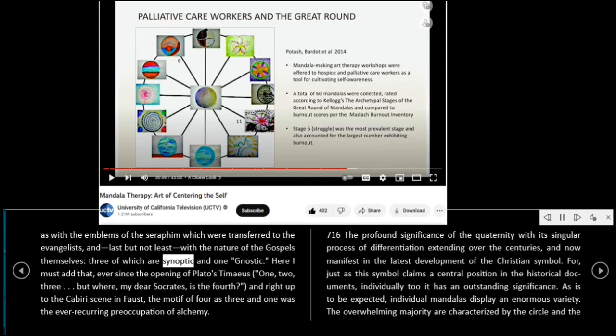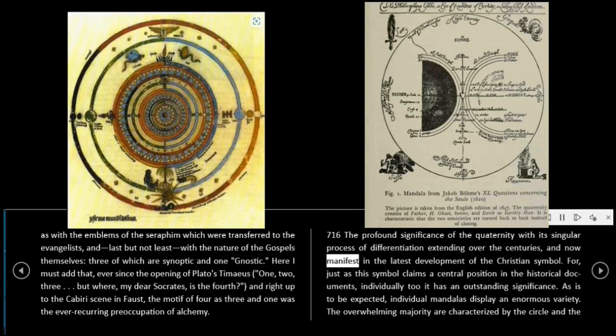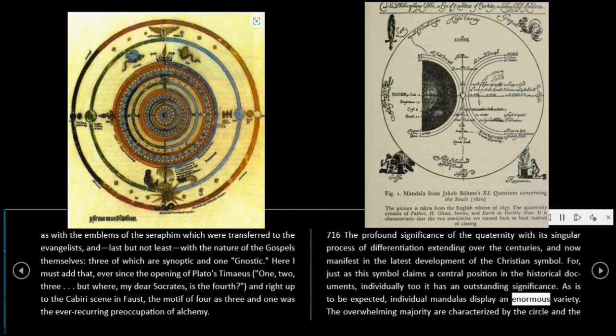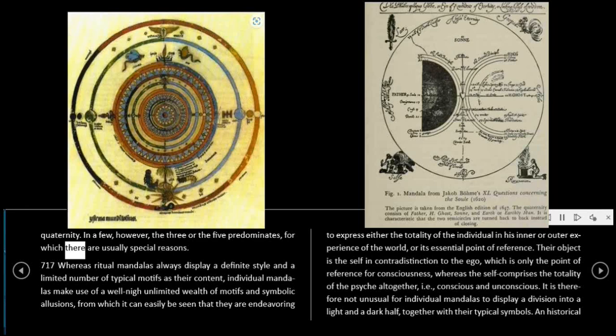Here I must add that, ever since the opening of Plato's Timaeus — one, two, three, but where, my dear Socrates, is the fourth? — and right up to the cabaret scene in Faust, the motif of four as three and one was the ever-recurring preoccupation of alchemy. 716: The profound significance of the Quaternity, with its singular process of differentiation extending over the centuries, and now manifest in the latest development of the Christian symbol, just as this symbol claims a central position in the historical documents, individually too it has an outstanding significance. Individual mandalas display an enormous variety; the overwhelming majority are characterized by the circle and the quaternity, though in a few the three or the five predominates, for which there are usually special reasons.